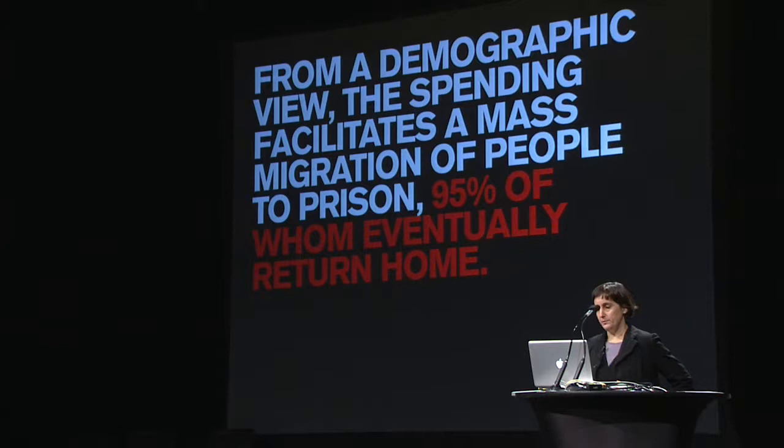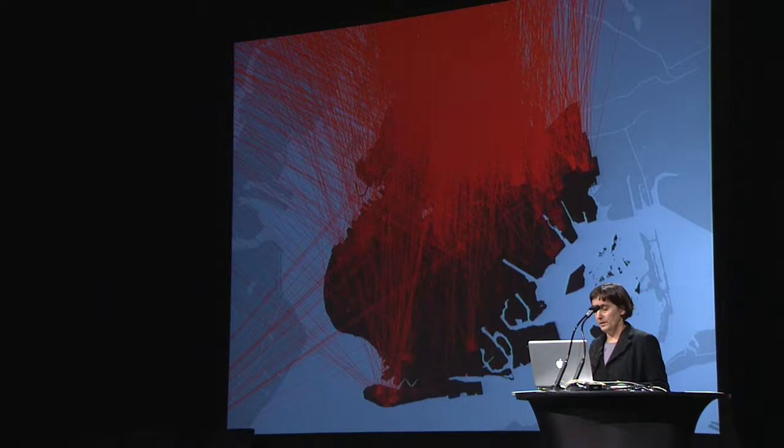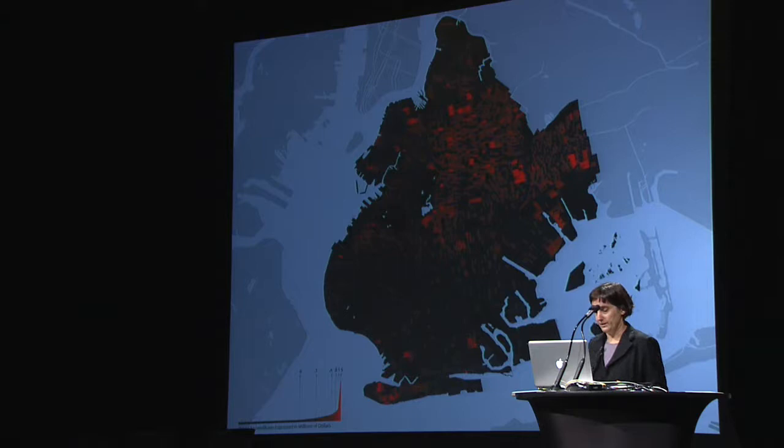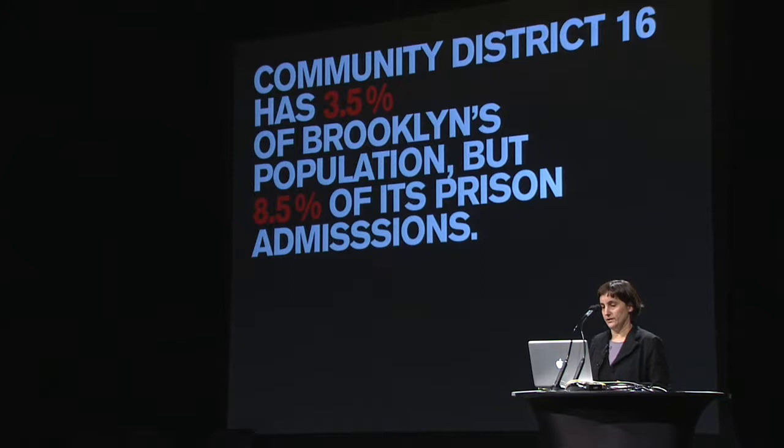From a demographic point of view, spending facilitates a mass migration of people to prison, 95% of whom eventually return home. This is a map which connects a line from people who have been incarcerated in Brooklyn to where they are housed in prison, upstate New York. Here's the expenditure map. Looking at Community District 16, for instance, in Brooklyn.